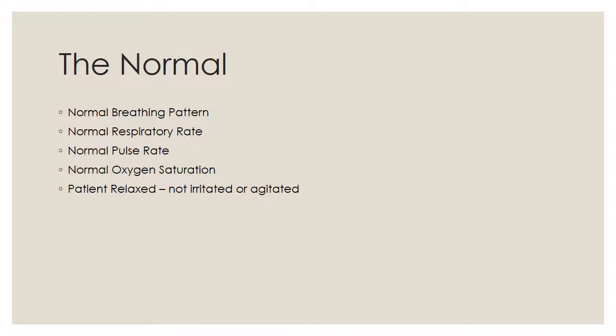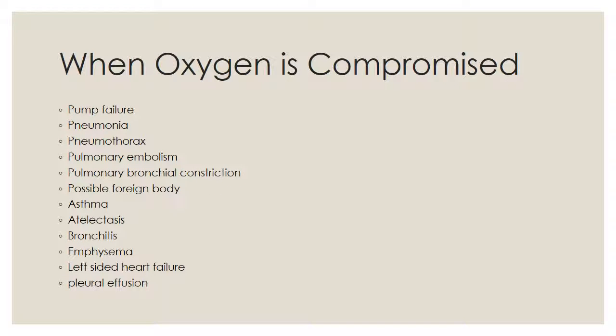A patient has normal oxygenation if the breathing pattern is normal, respiratory rate is within normal range, pulse rate is normal, oxygen saturation is normal, and the patient is relaxed — not irritated or agitated — since irritation and agitation are signs of low oxygenation. When oxygen is compromised, such as in pump failure, pneumonia, or pneumothorax, the nurse must ensure the body maintains good oxygen saturation.